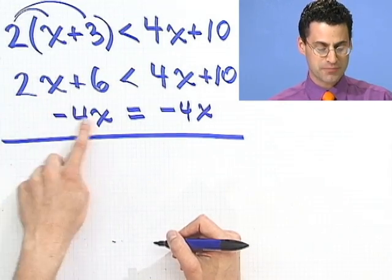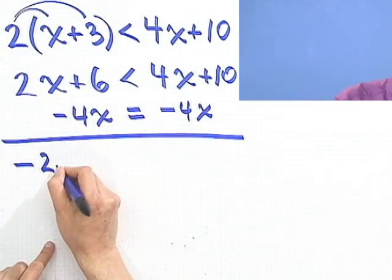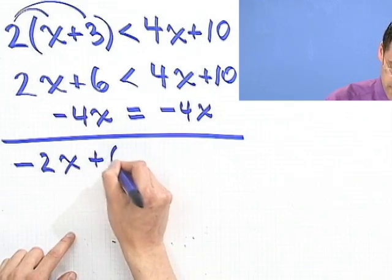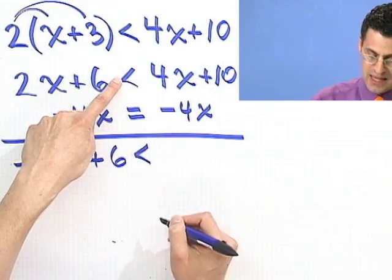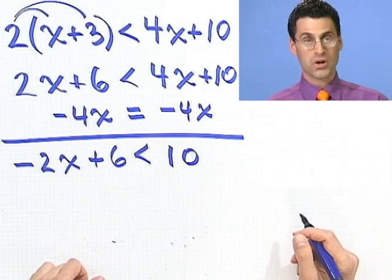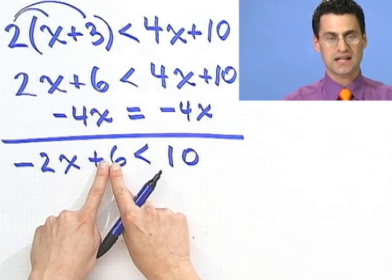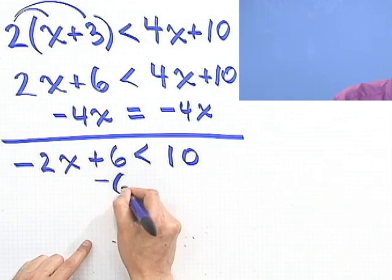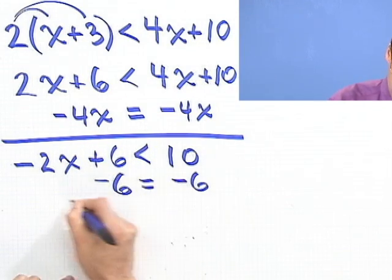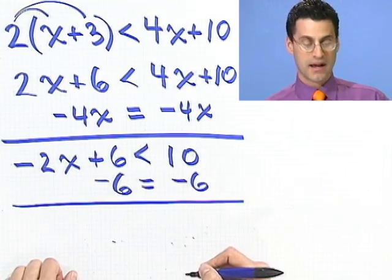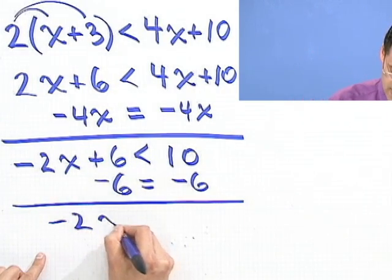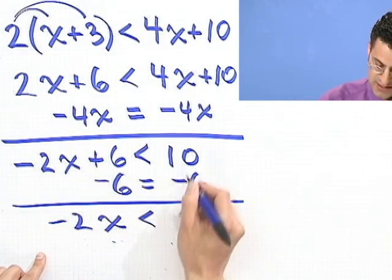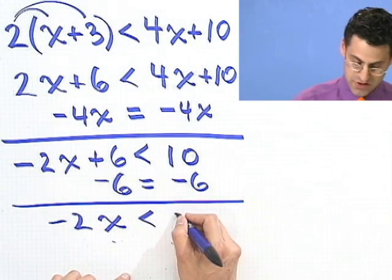But now I have 2x minus 4x. That's a negative 2x. And don't forget the plus 6 is still there. And that's still going to be less than. And these cancel away. And I'm left with 10. Now I take the plus 6 and I can bring it over to this side by subtracting. I'm not changing the balance of the scale at all. When I combine, I see a minus 2x is still less than, and then I have 10 minus 6, which is 4.